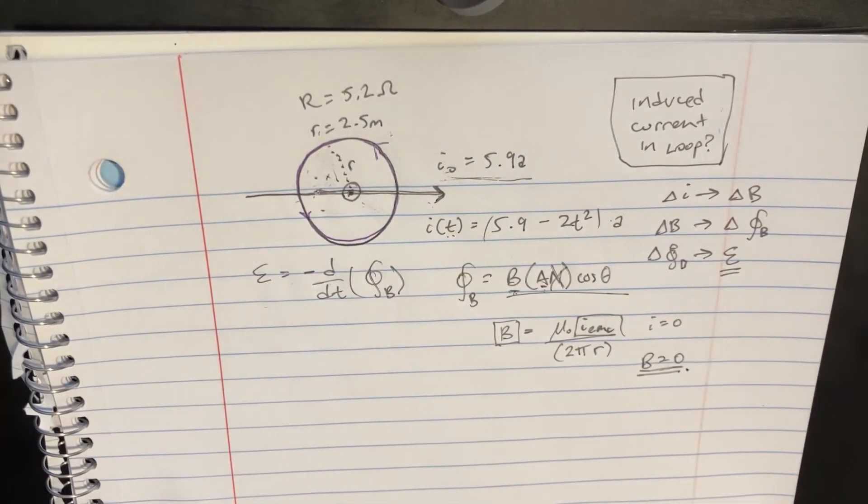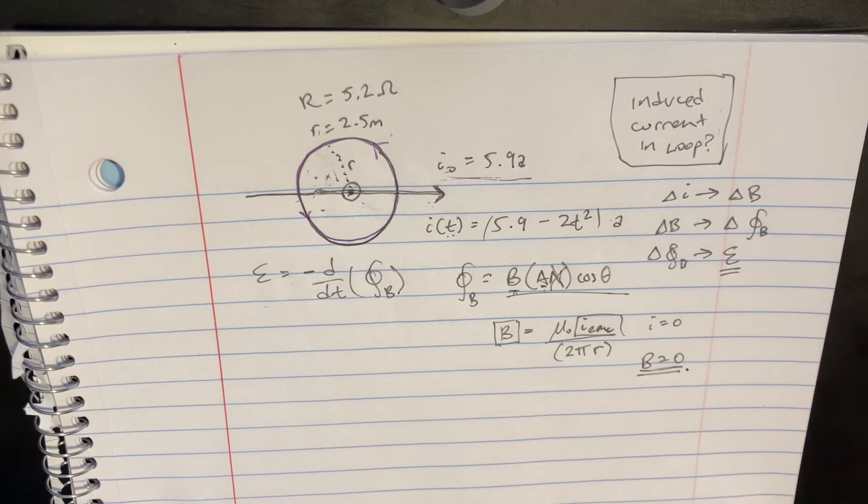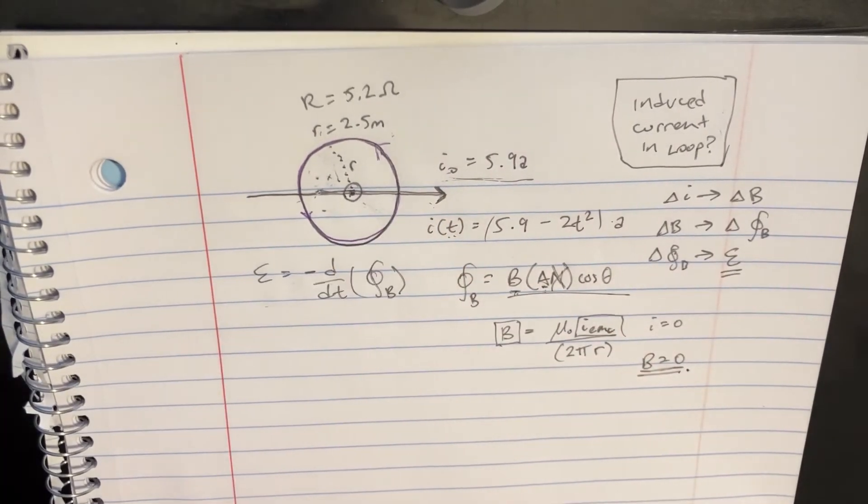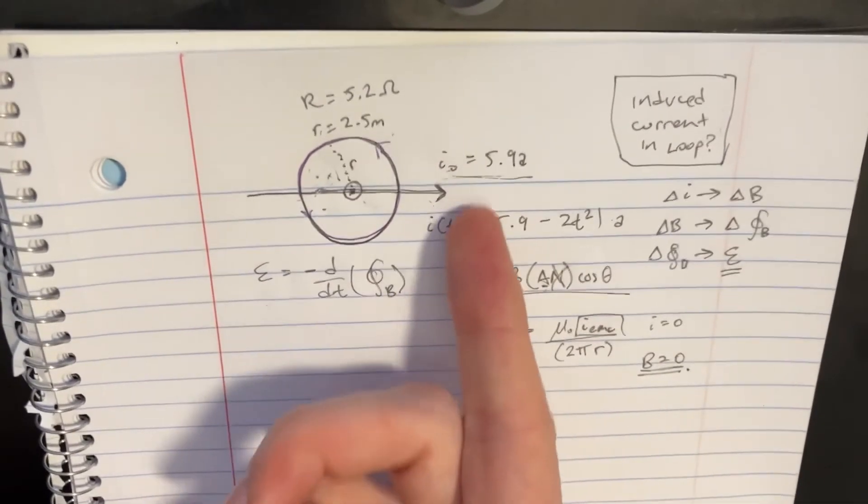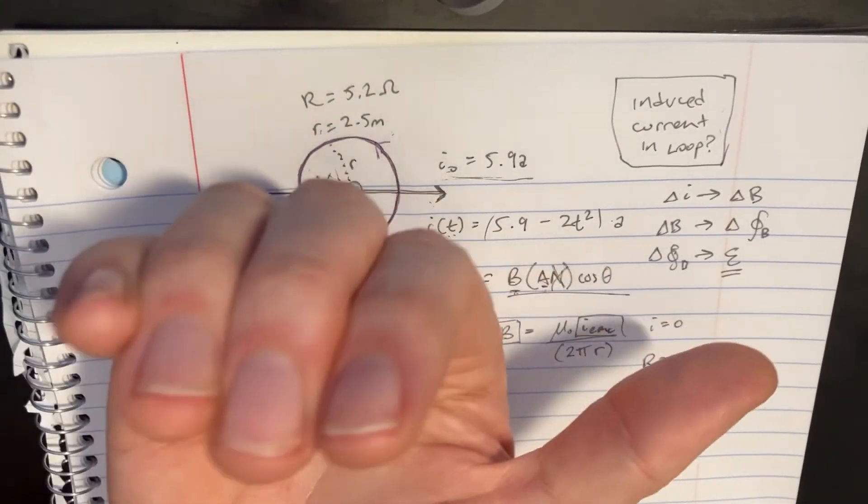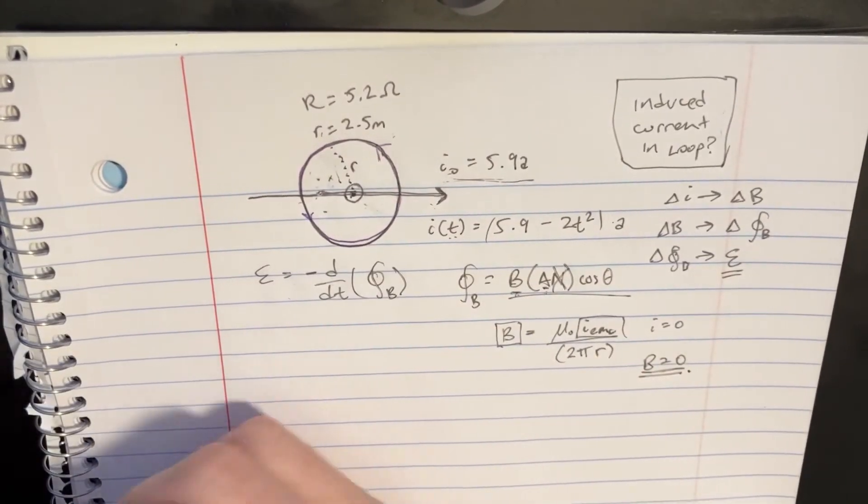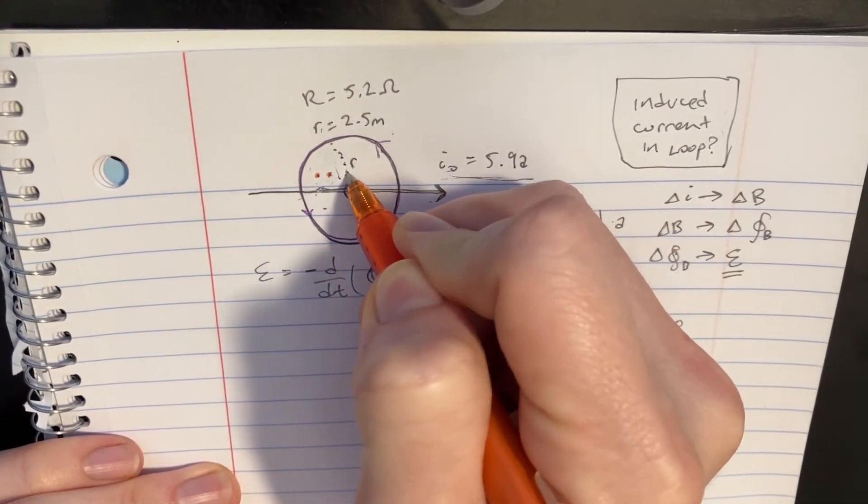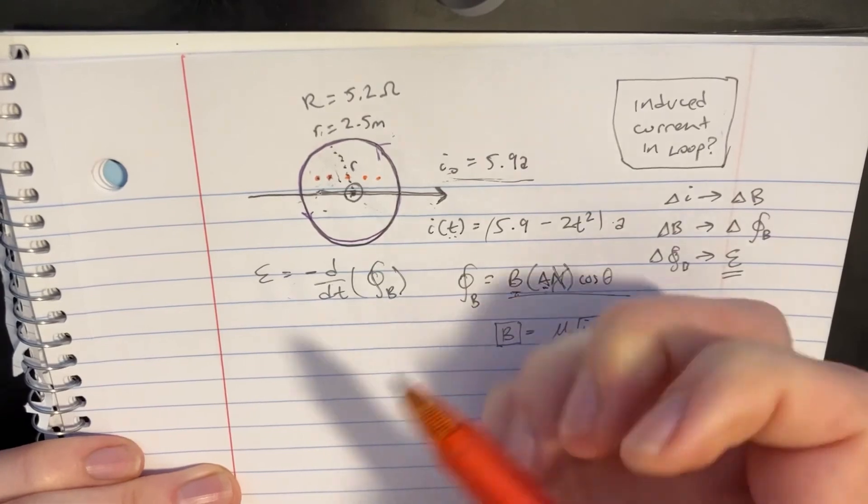That's interesting. But if we wanted to sort of figure that out in a different way, we can kind of also look at it in terms of what direction is this current going? It's this way. So we could put our thumb in this direction and notice that our fingers would be coming out of the page.